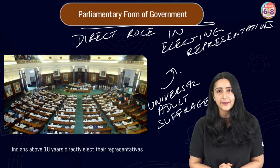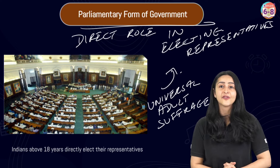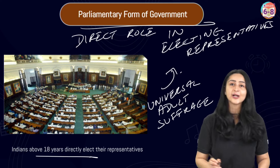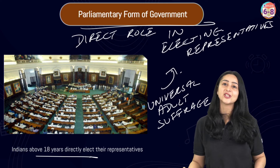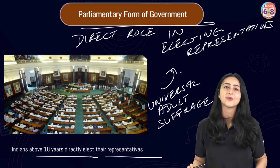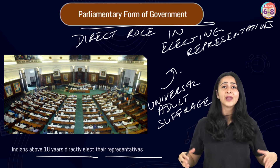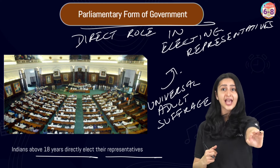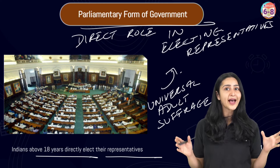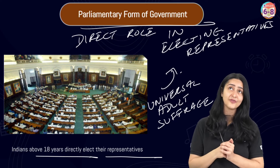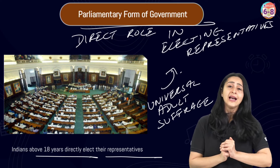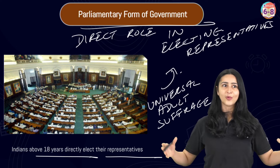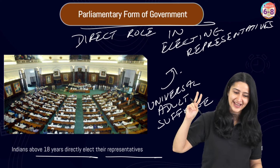Universal adult suffrage means that all citizens who are 18 years or above can directly vote for their representatives. This ensures a democratic mindset in the country where everyone can vote for their representative irrespective of barriers of gender, caste, and class. The makers of our constitution were really visionaries — they saw forward and thought ahead. This was the second feature.